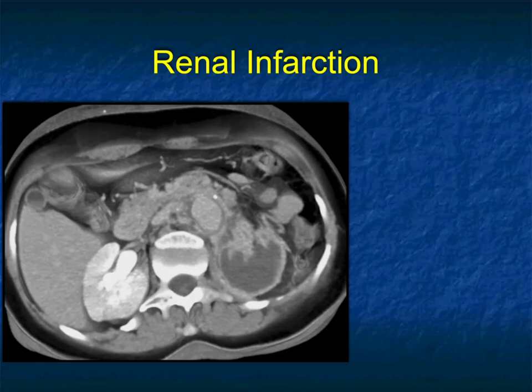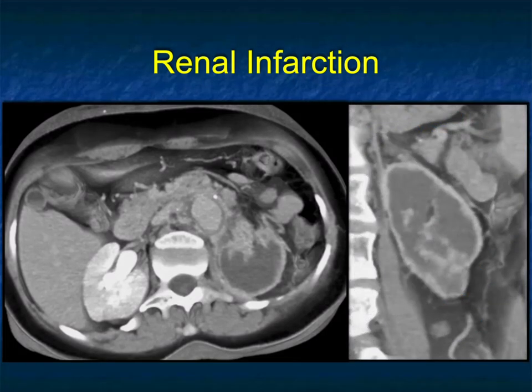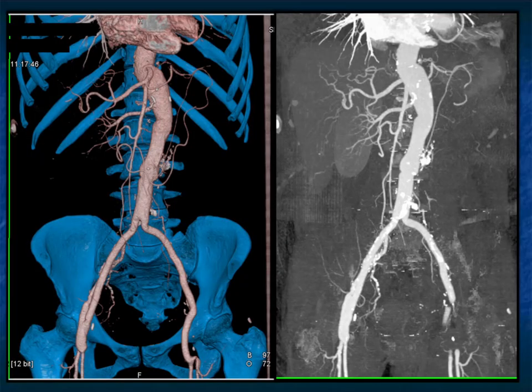Here's a good example of a global renal infarct. The cortex and medulla are gone, so you lose the cortical medullary interface, and you see enhancement around the edge of the kidney from the capsular vessels. This is a global infarct — the kidney has no residual function, and this patient will end up with a nephrectomy.